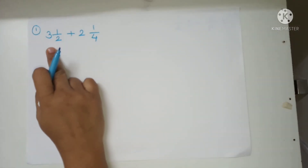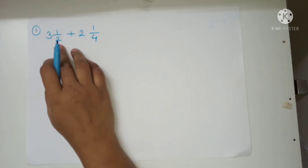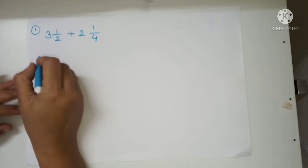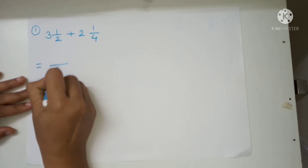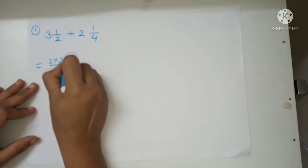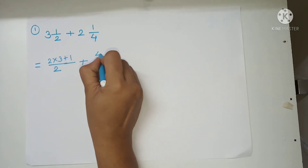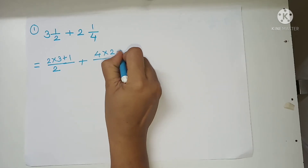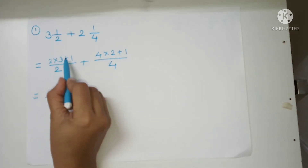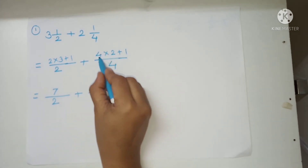In this example we have to add mixed numbers. First of all we have to convert them into improper fractions. The denominator is 2, and 2 multiplied by 3 plus 1, plus 4 multiplied by 2 plus 1, upon 4. Next step: 2 threes are 6 plus 1 is 7 upon 2, plus 4 twos are 8 plus 1 is 9 upon 4.